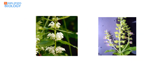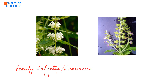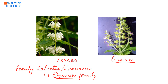Verticillaster inflorescence is characteristic of the family Lamiaceae — also called Ocimum family. Examples include Ocimum, which is tulsi (sacred basil), and Leucas. You can see that at the nodes of the leaf, flowers appear to be concentrated, but they are arranged first in the form of a dichasial cyme and then a monochasial scorpioid cyme. The same can be seen in tulsi.